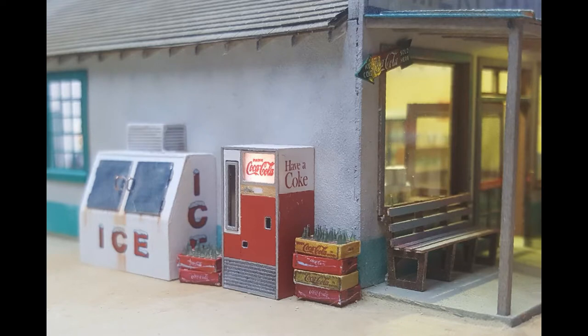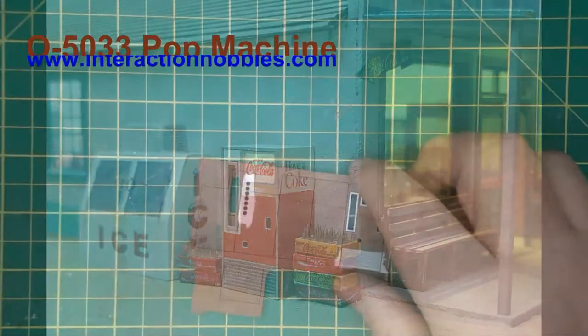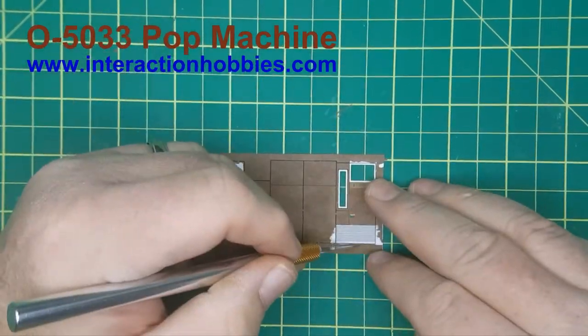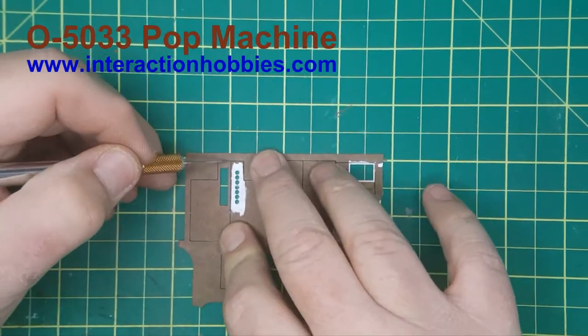Hi there! Today we are going to build this cool little O scale detail from Interaction Hobbers. It is our kit 05033. It is comprised of laser cut basswood and laser board parts. It goes together quickly once you have everything painted.